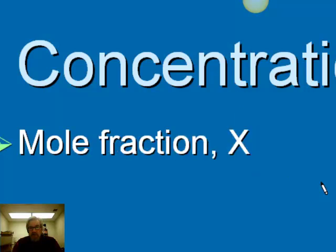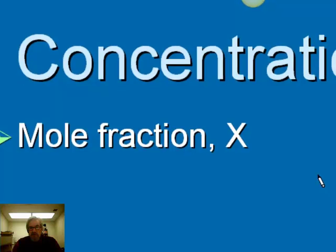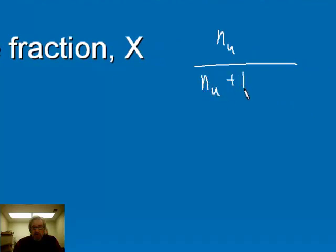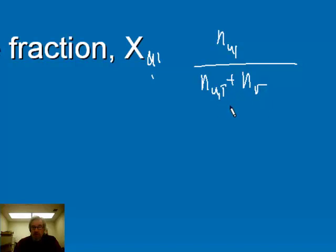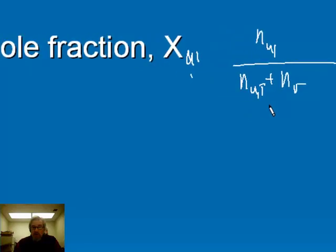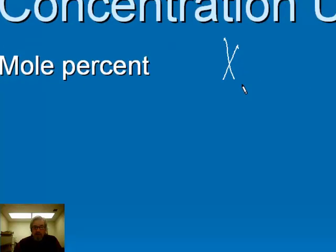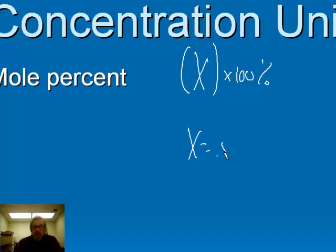We still use molarity a lot because most work happens at the same temperature. However, it's nice to have temperature-insensitive units. One you've seen before is mole fraction — the ratio of moles of solute to the total moles in the solution (solute plus solvent). For multiple solutes, the mole fraction of solute U1 equals moles of U1 divided by total moles of all solutes plus moles of solvent. Mole percent is just mole fraction times 100, so a mole fraction of 0.5 is a mole percent of 50%.